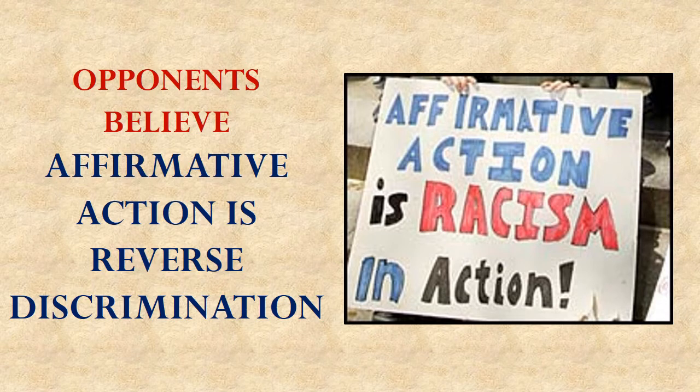Opponents of affirmative action believe that it is really just reverse discrimination — that as a society we say we don't discriminate anymore, but we're going to continue to discriminate, in this case to help out some groups rather than hurt them. But in the end, helping one group automatically hurts the other. For somebody who disagrees with affirmative action, they might say the way to stop discriminating based on race is to just stop discriminating based on race.